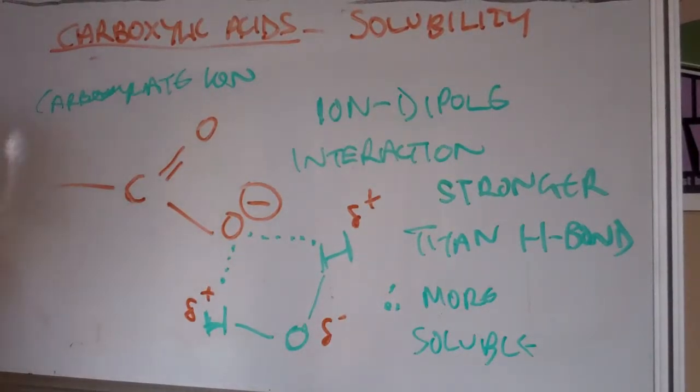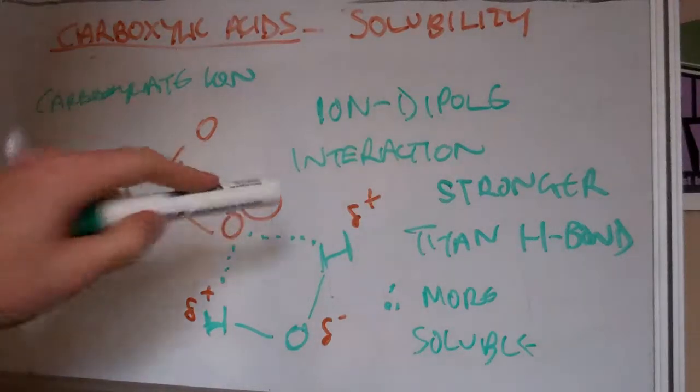So in summary, the carboxylate ion is more soluble in water than the carboxyl group, due to the fact that it can undergo ion-dipole interactions with water molecules, due to the full negative charge on this oxygen here.